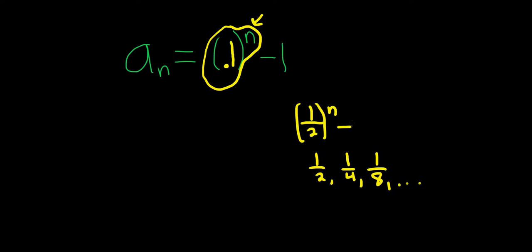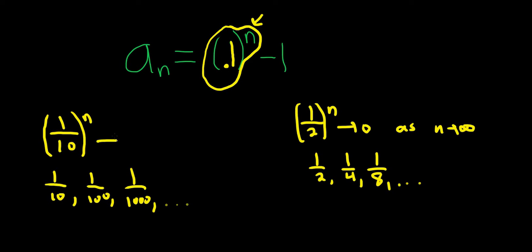So this approaches 0 as n goes to infinity. Same thing in this problem. 0.1 is really like 1 tenth. So you have 1 tenth to the n. And so if you plug in 1, you'll get 1 tenth. Plug in 2, you'll get 1 over 10 times 10, so 1 over 100. Then 1 over 1,000.